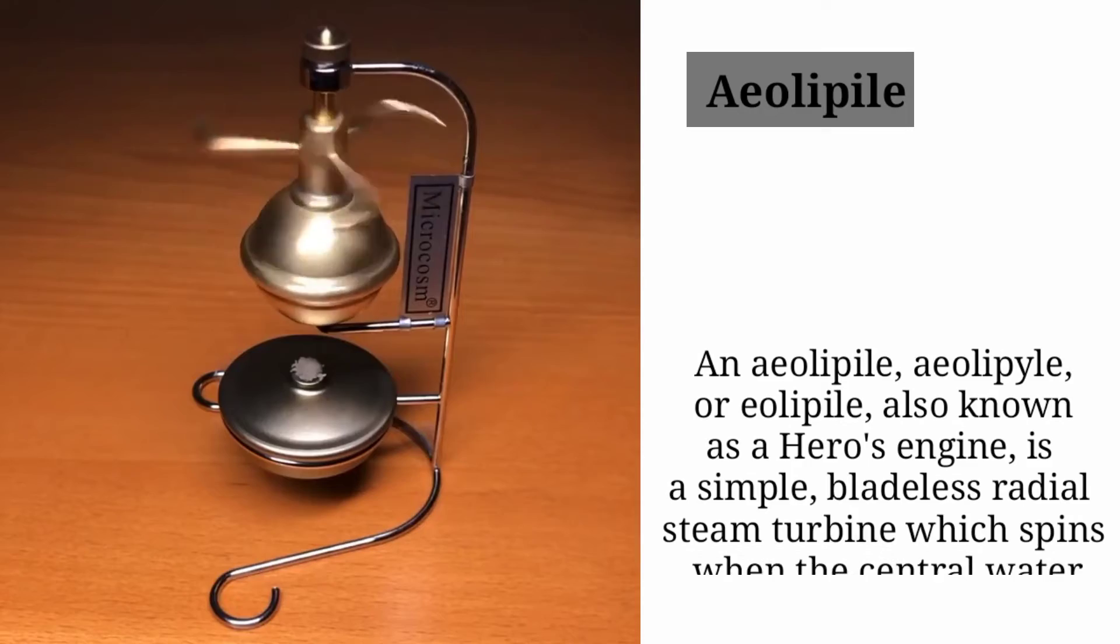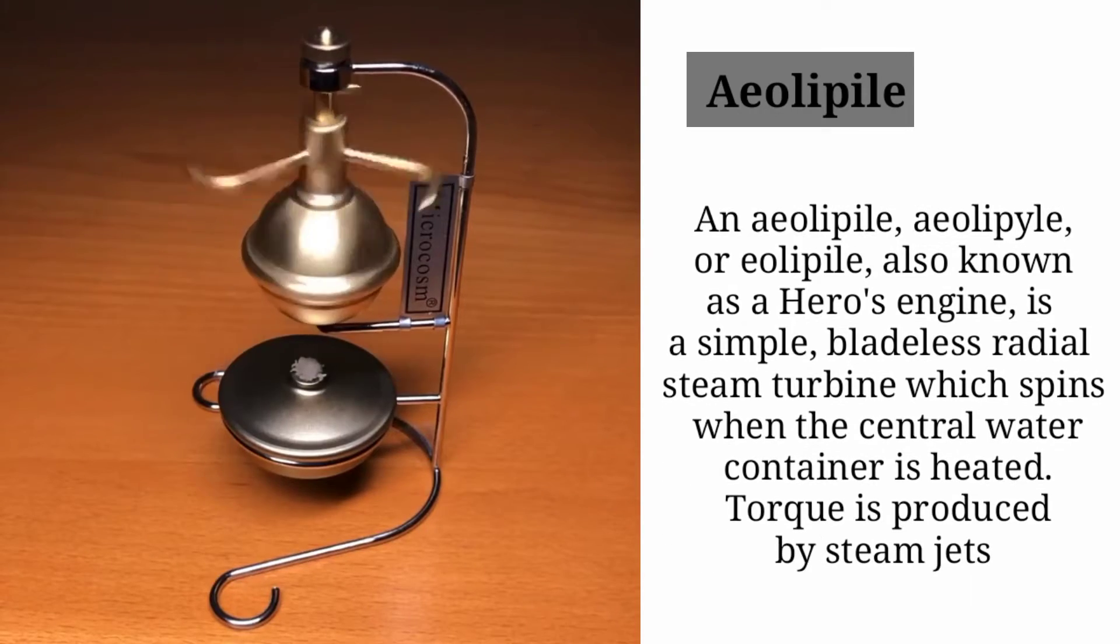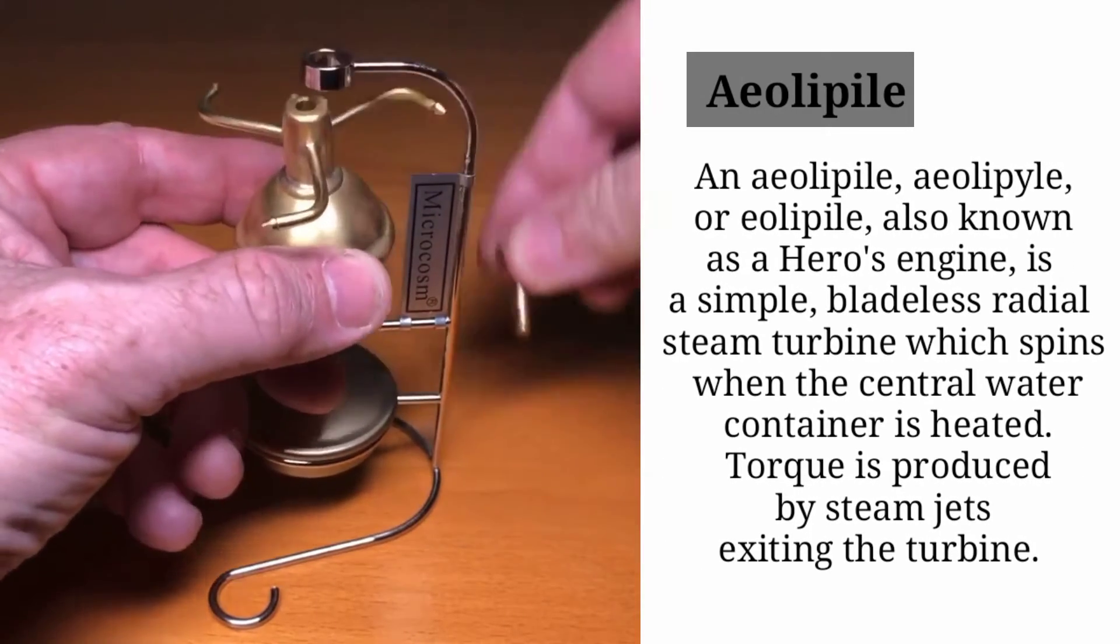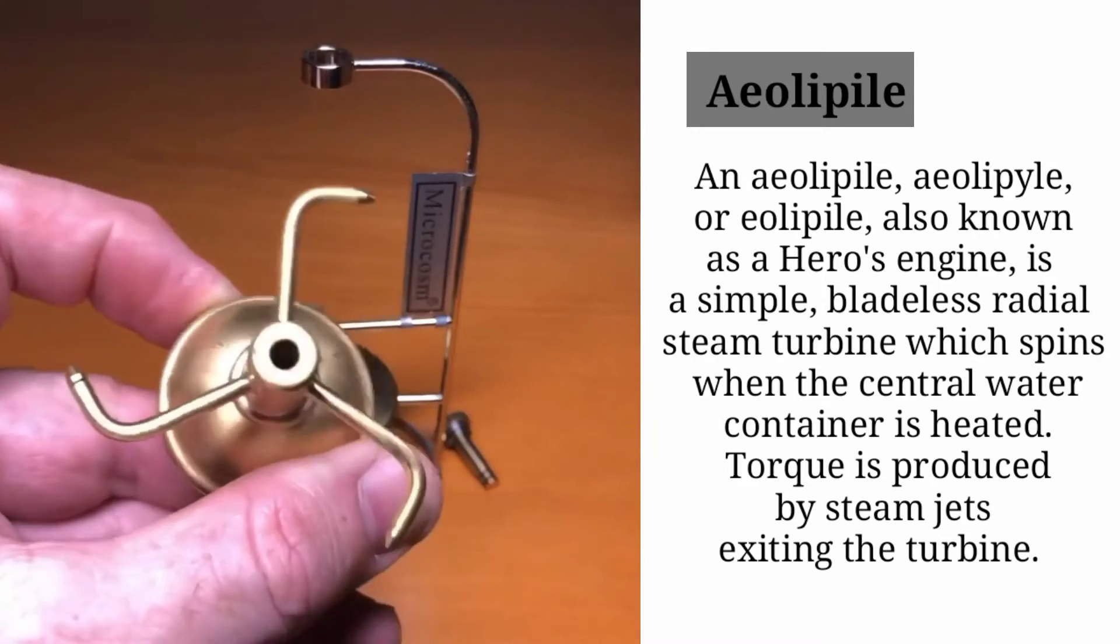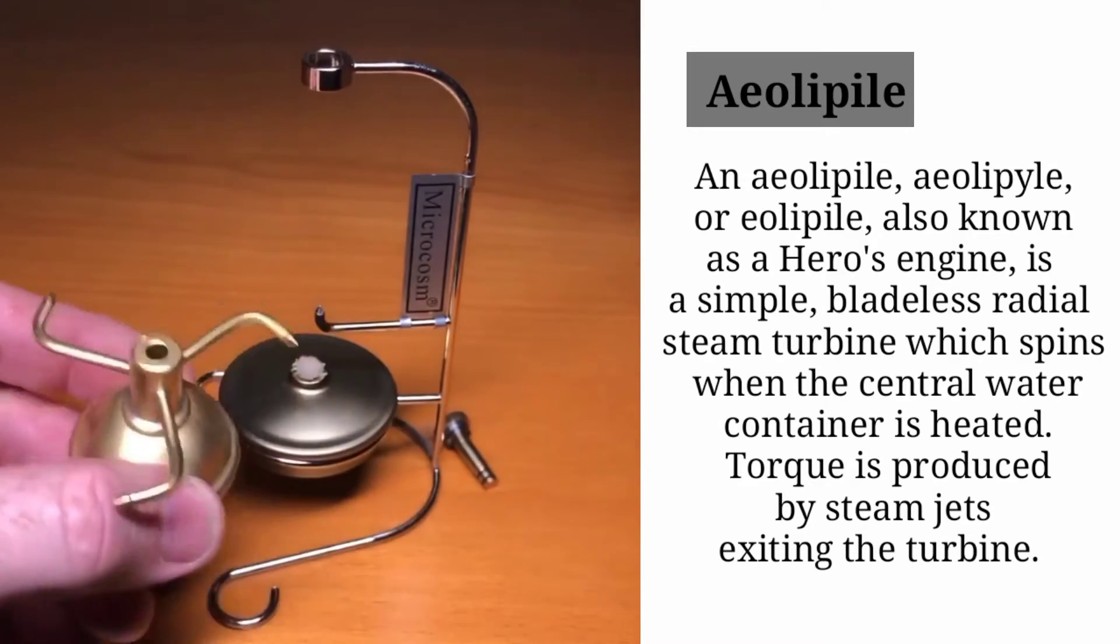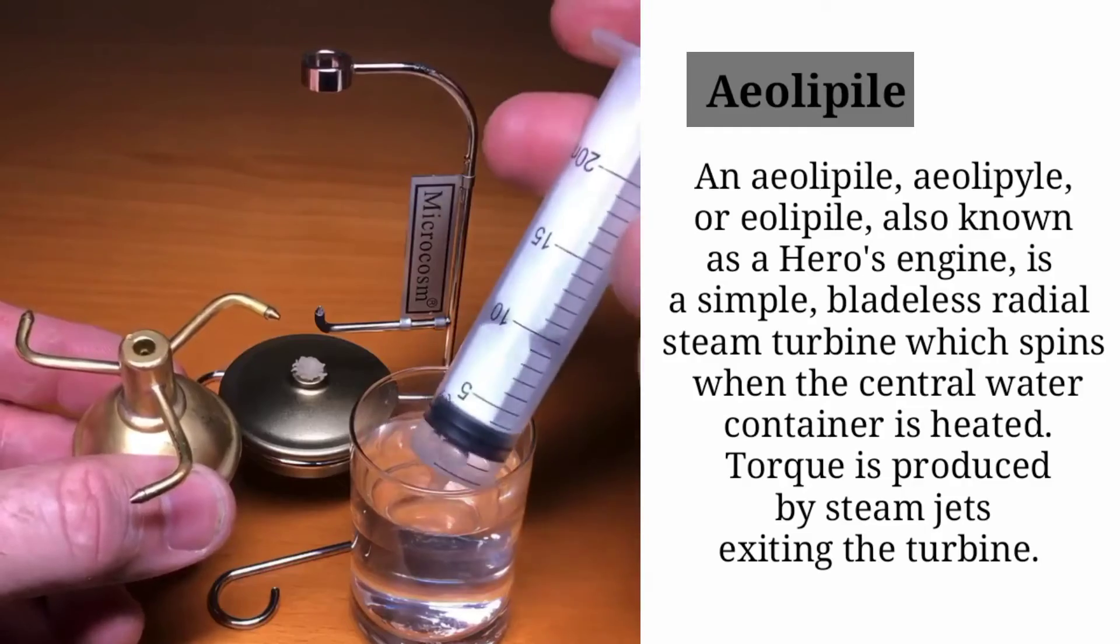An aeolipile, also known as a Hero's engine, is a simple bladeless radial steam turbine which spins when the central water container is heated. Torque is produced by steam jets exiting the turbine.